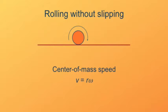Since it's rolling without slipping, its translational speed is directly tied to its angular speed. The relationship is the translational speed v equals the radius r times the rotational speed omega.